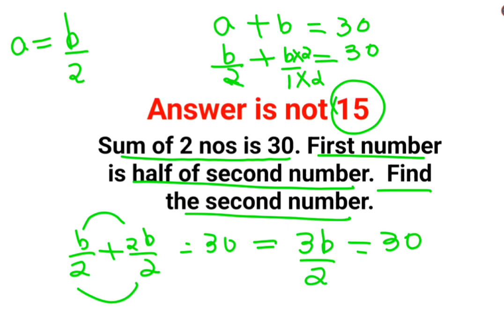So we can say 3B equals 60. Just take this 2 to the other side where it gets multiplied. Divide both sides by 3.